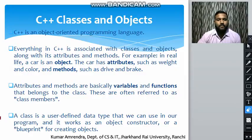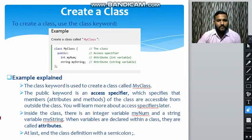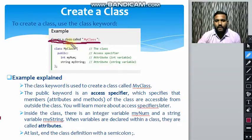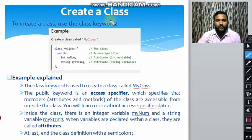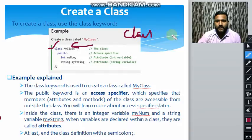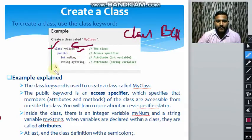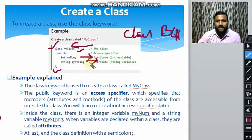So let us see how we create a class. First of all we need the keyword 'class'. We use the keyword class for creating a C++ class. For example, 'class BCA' is also a class. Under that we have an opening and closing bracket ended with a semicolon, and inside the class we can declare many types of data members.